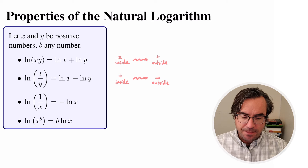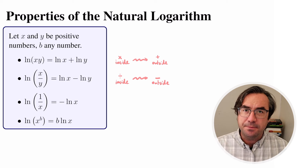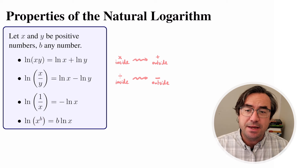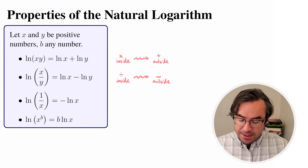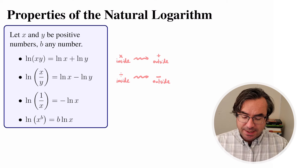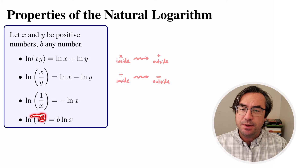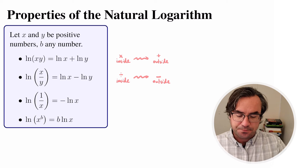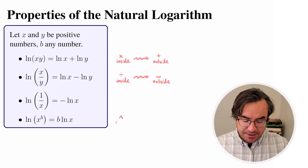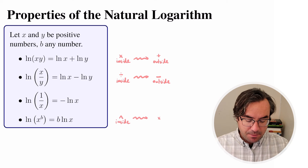Our other major log property says that if we have an exponent — so if x is being raised to a power — and that's happening inside the log function, we can break this apart. We can take that exponent and move it out in front of the natural log. So an exponent inside the log function becomes multiplication outside the log function.